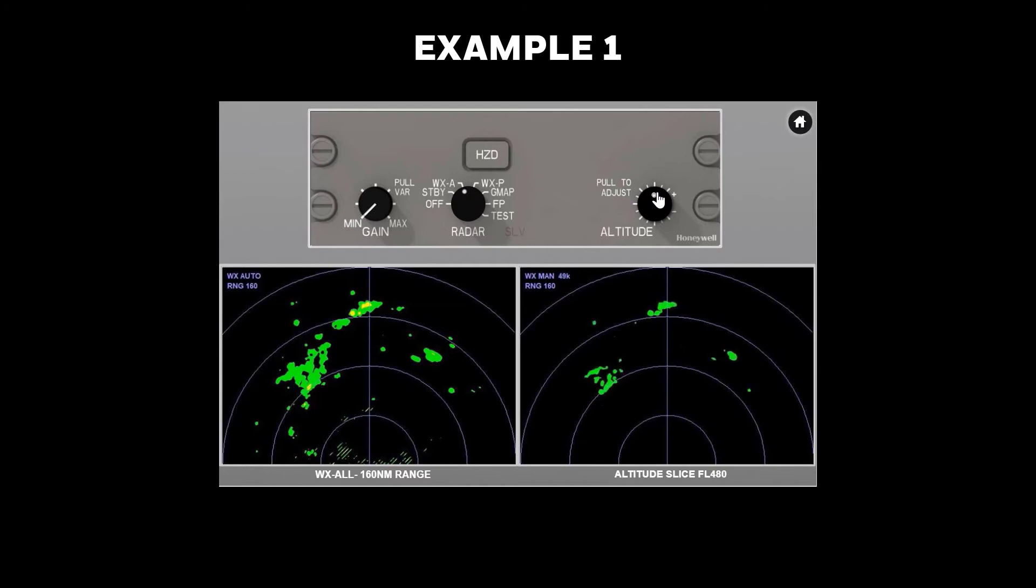In this particular scenario, the fact that there isn't much difference between the two images beyond 80 miles doesn't necessarily mean all this weather is at flight level 400. It just indicates that given the resolution at this range, this is the weather that can be separated from the ground clutter.